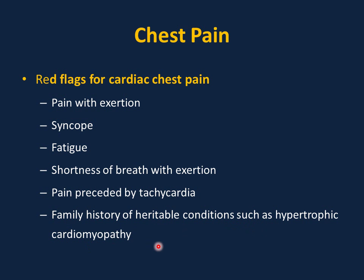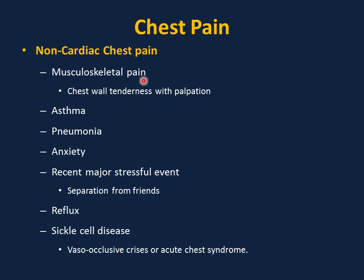Musculoskeletal pain is a very important cause of chest pain in children and adolescents. These patients have chest wall tenderness with palpation and respond well to NSAIDs such as ibuprofen and reassurance. Asthma — especially exercise-induced bronchospasm — is another important cause. These children may not have a cough but may have chest tightness they perceive as chest pain. Giving two puffs of albuterol before exercise and seeing if it relieves the pain is both diagnostic and therapeutic. Wheezing may not be present on examination.